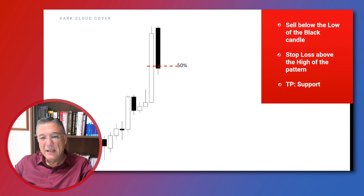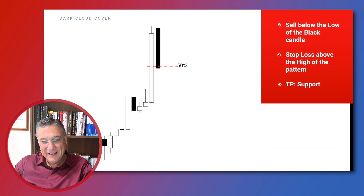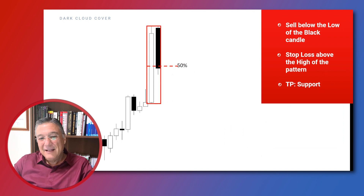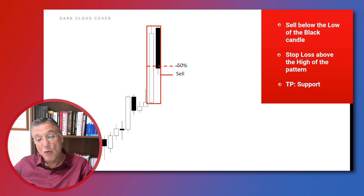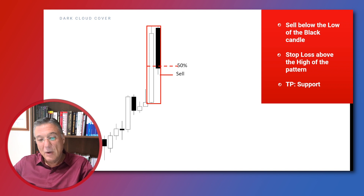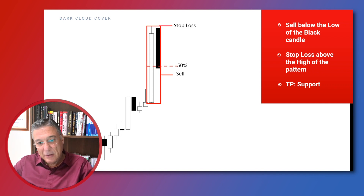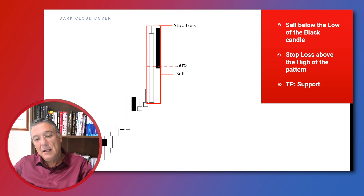The first strategy identifies the dark cloud cover at the top of the rally and enters the market with a sell order right below the low price of the second candlestick — not below the low price of the pattern, as that has more risk. The distance between the sell and the stop loss is shorter compared to the distance between the low price of the pattern and the stop loss.